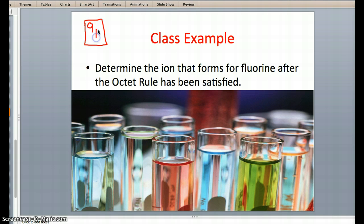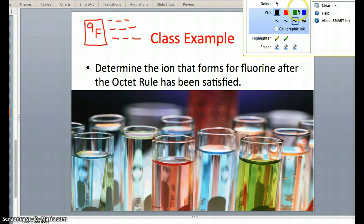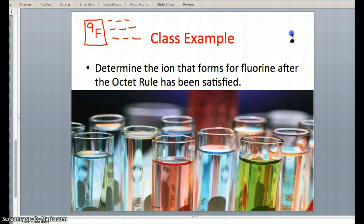Fluorine has an atomic number of 9, indicating that we have 1, 2, 3, 4, 5, 6, 7, 8, 9 electrons. First things first, I'm going to draw my nucleus. Given that only 2 fit in the first shell, I'm going to need a first and second electron shell. Here's our first, here's our second.